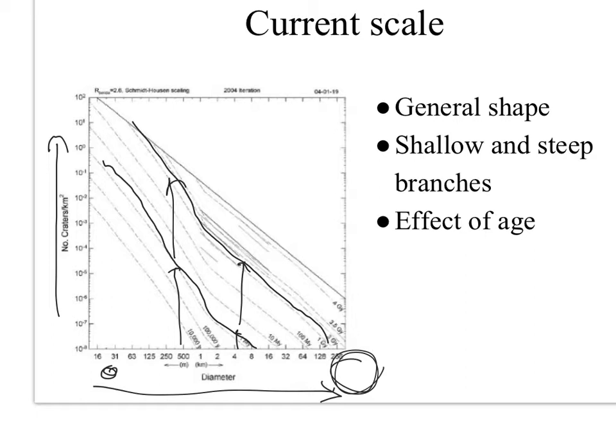If you look at larger craters, there will be fewer of them in both areas, but still more in the older area than the younger. For really large craters — like 64-kilometer craters — a young area may not have been around long enough to get hit by an object that large. You'd expect to find some on a surface that's been around for a billion years, but a surface that's only been around a million years may not have had time to be hit by something that large yet.